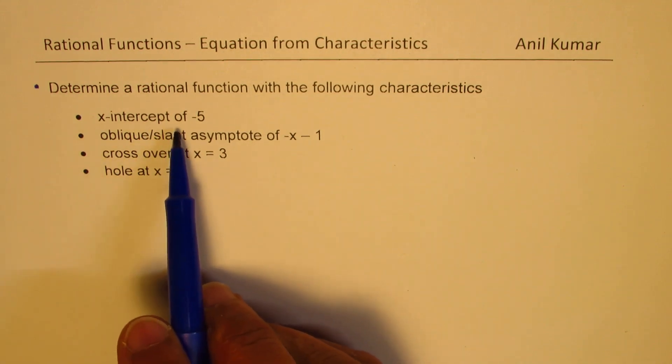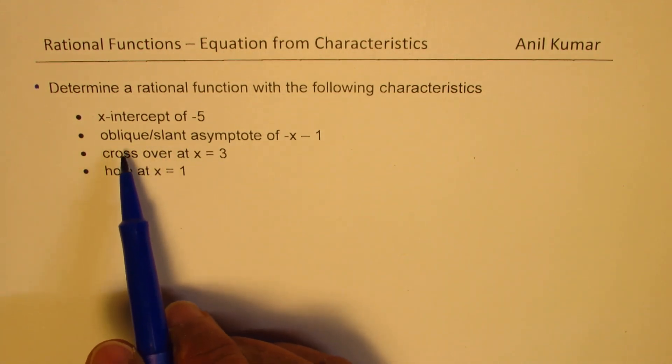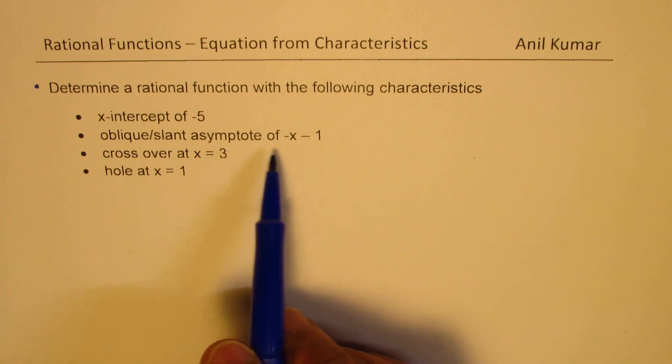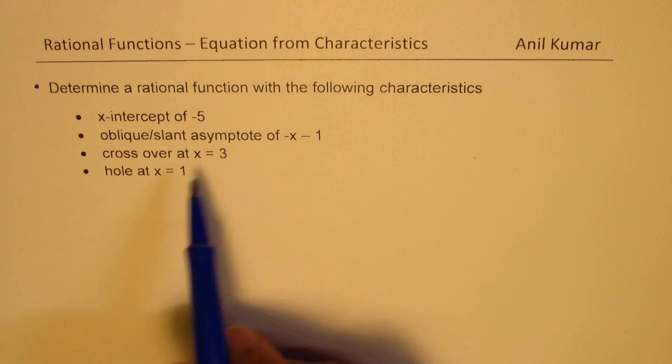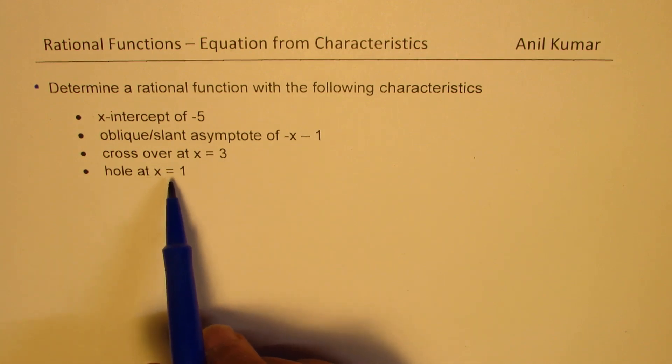x-intercept of minus 5, oblique or slant asymptote of minus x minus 1, cross over at x equals 3, and hole at x equals 1.